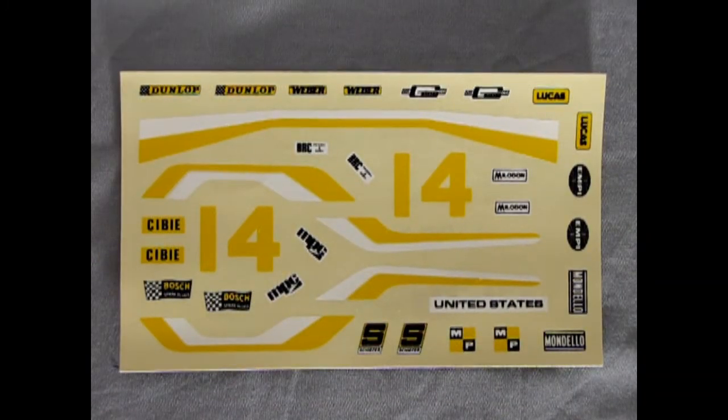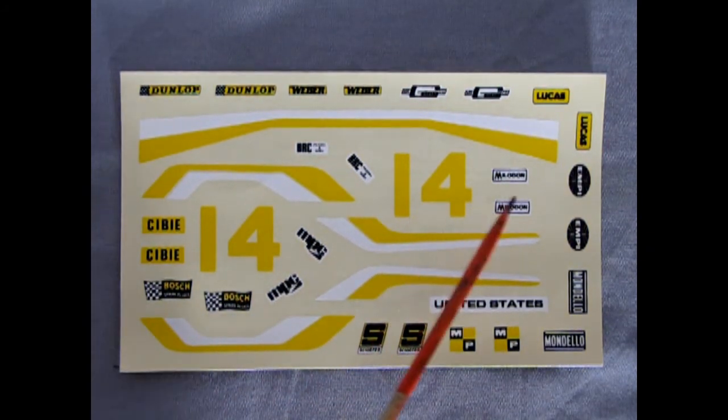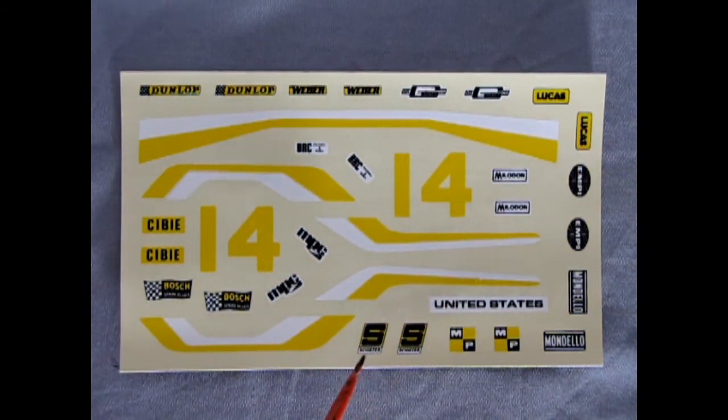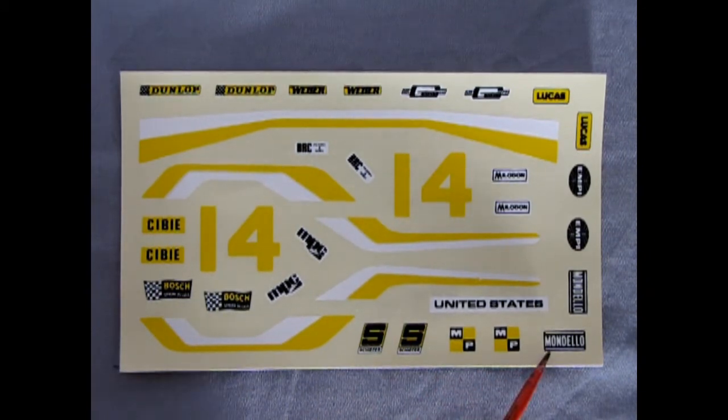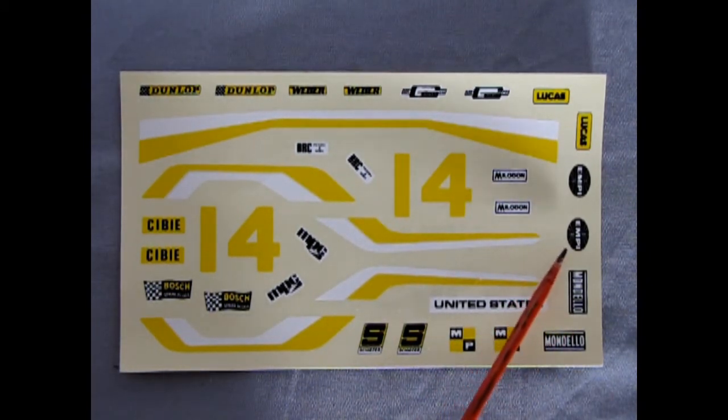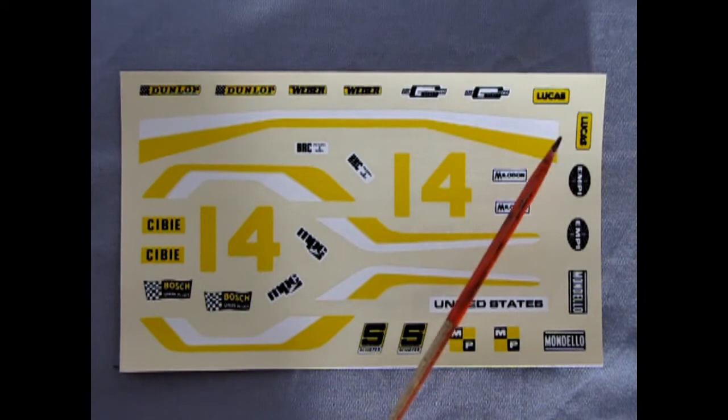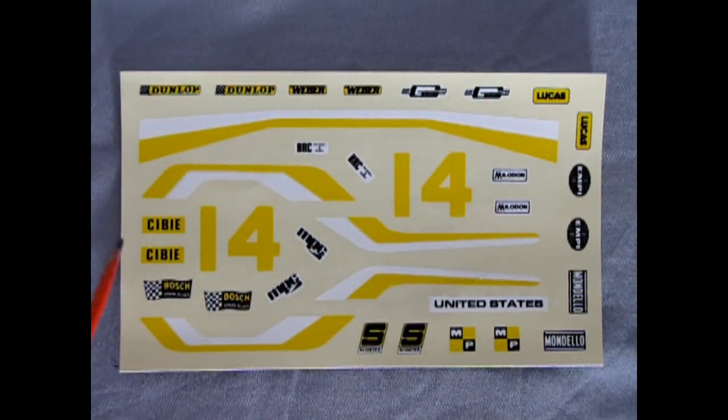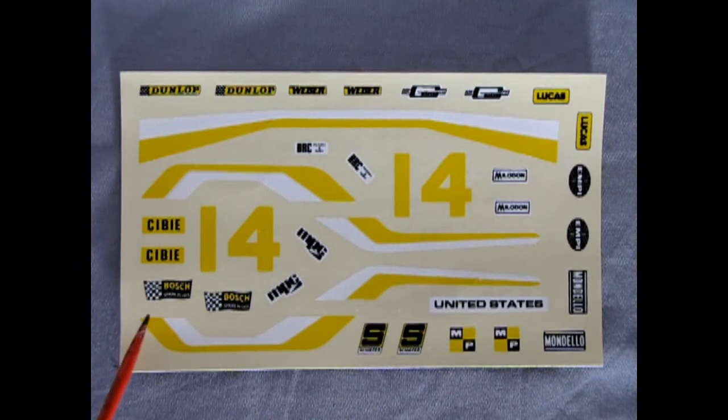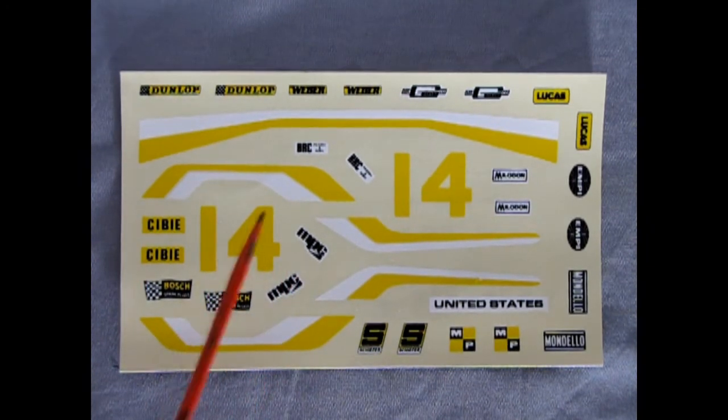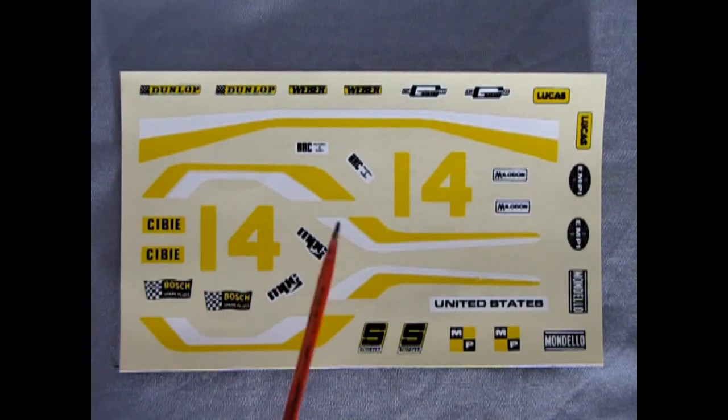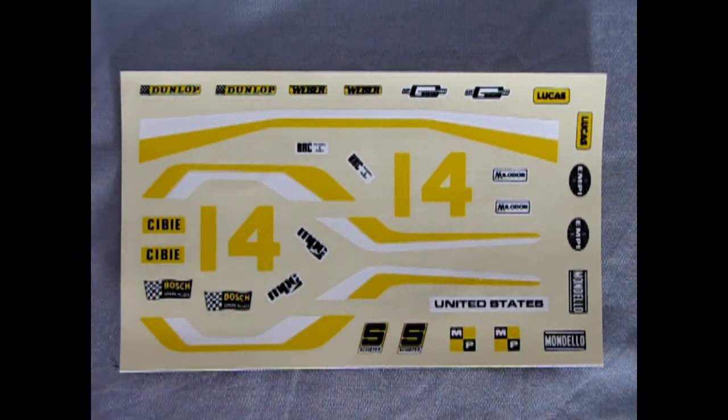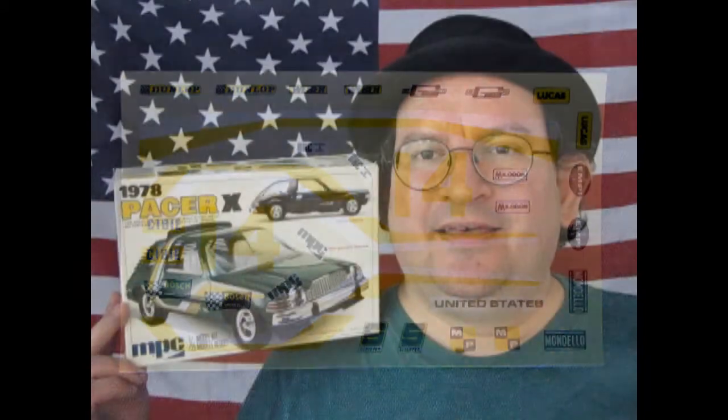So here we have our rally decals and we've got a cool company Melodon on here and we've got Scheiffer, MP, Mondello there's the EMPI for racing in europe, Lucas is our headlight we got Mr Gasket Company, Weber, Dunlop tires, CB lights and Bosch spark plugs as well as the MPC logo and you get the cool white and yellow stripes as well as the number 14 to put on your cool rig.